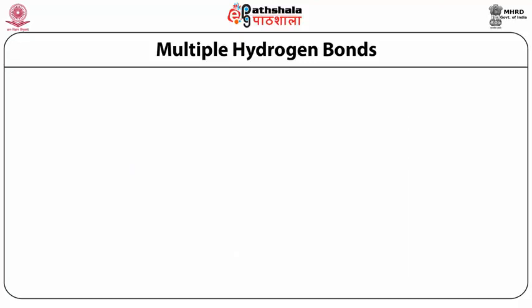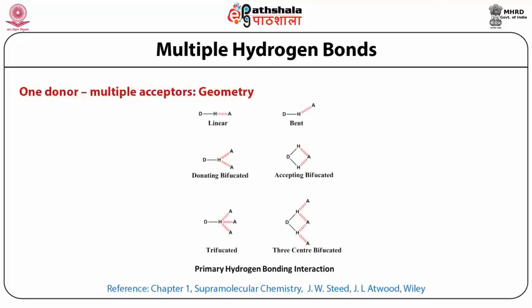Different geometries of hydrogen bonding occur when one donor has multiple acceptors available. The first example shows linear hydrogen bonding. The second is bent, where D, H, and A are at a particular angle. There can also be bifurcated geometries — either donor-bifurcated (one donor, two acceptors) or acceptor-bifurcated — as well as trifurcated or three-center geometries. In all these cases, these are primary hydrogen bonding interactions between the atoms directly involved.